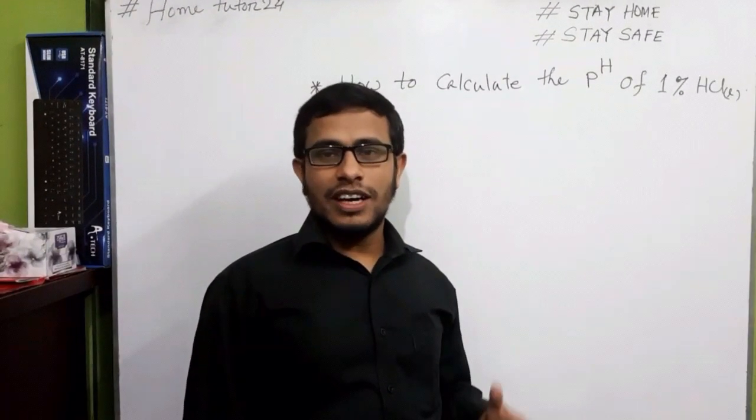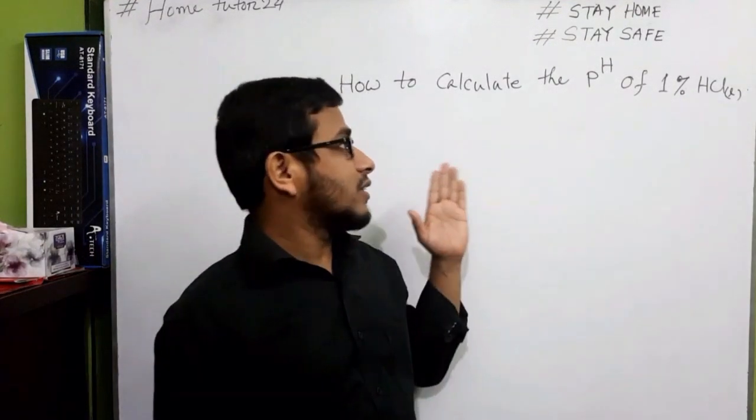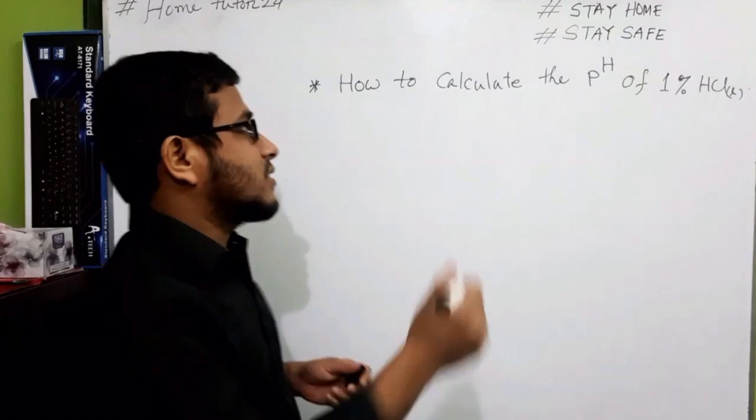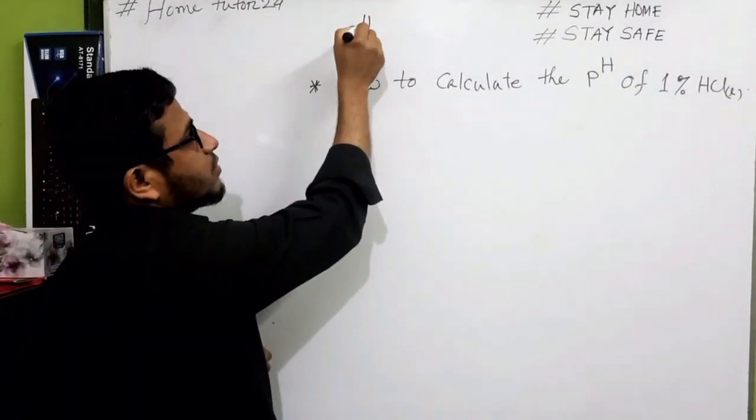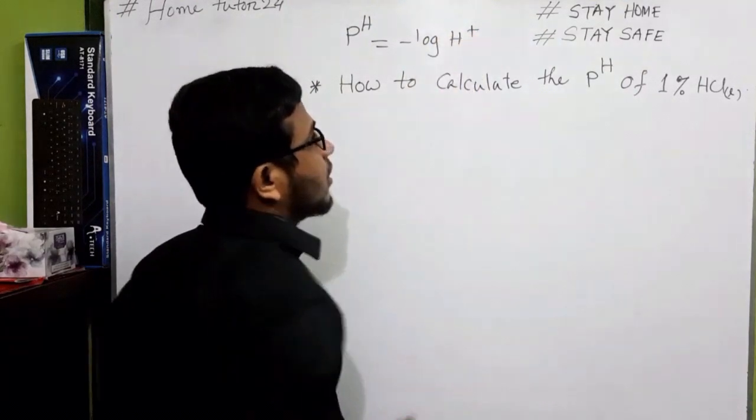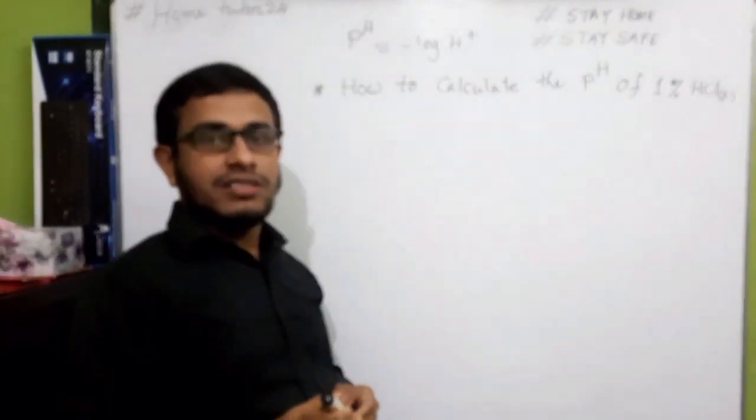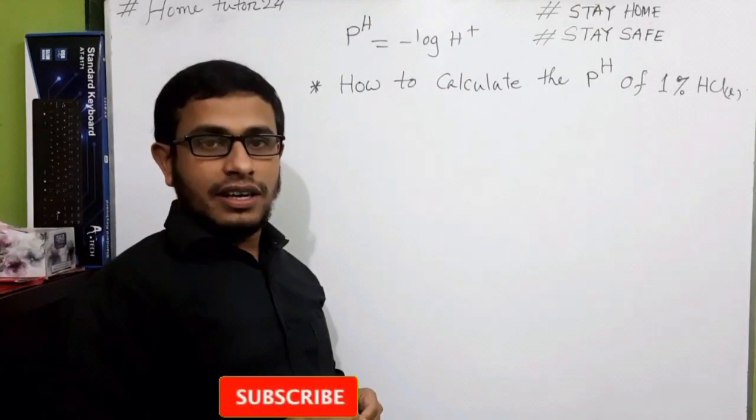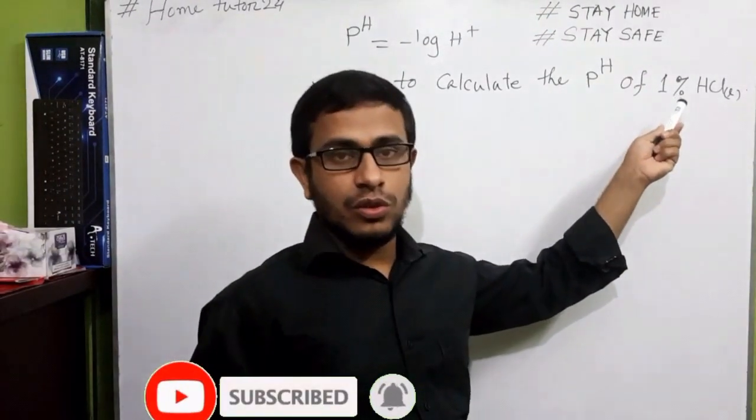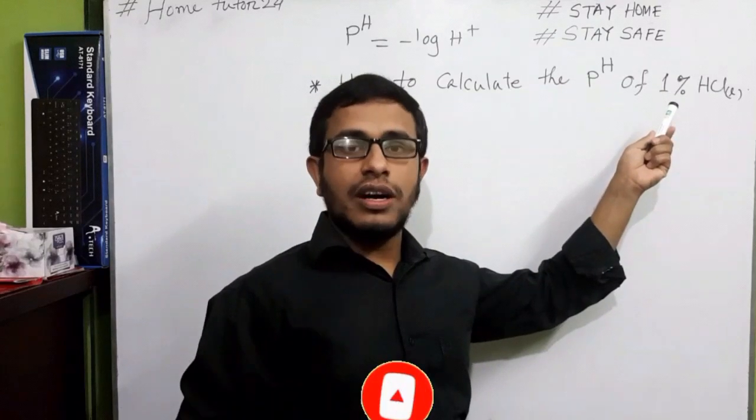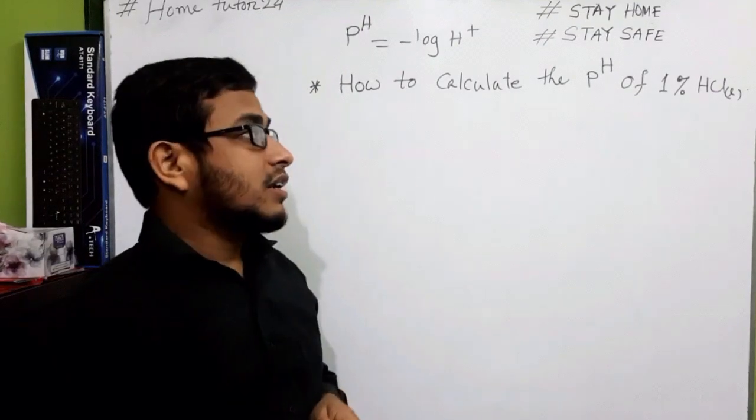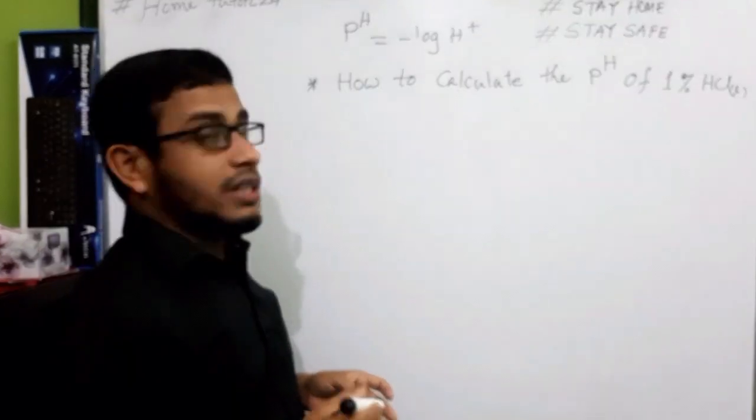Hello viewers, how are you? Today I am going to show you how to calculate the pH of 1% HCl solution. We know that pH equals minus log of H plus, where H plus is the molar concentration of hydrogen ion. So at first I have to calculate the molar concentration of HCl.